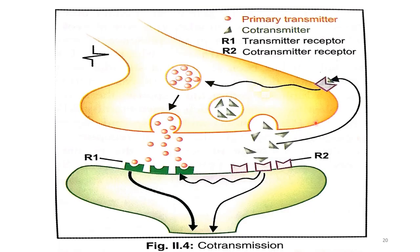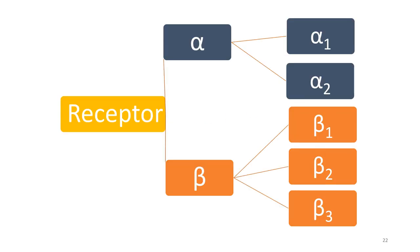Norepinephrine and epinephrine are the primary transmitters, with some cotransmitters also present. Adrenergic receptors are of two types: alpha receptors and beta receptors. Alpha receptors are subdivided into alpha-1 and alpha-2, while beta receptors are subdivided into beta-1, beta-2, and beta-3.